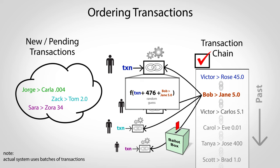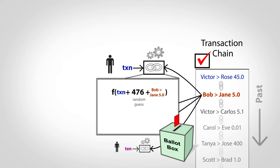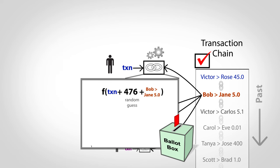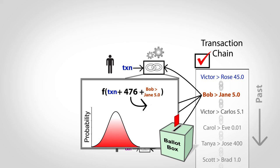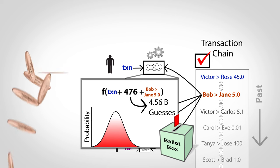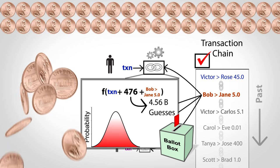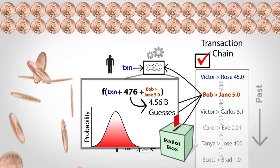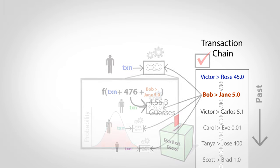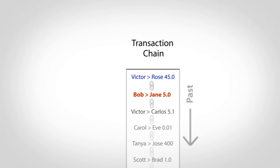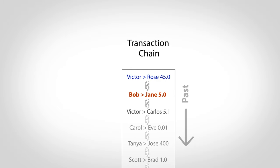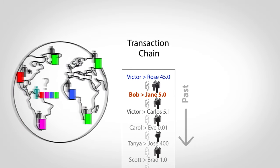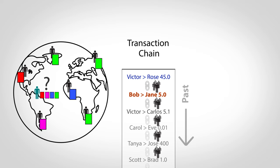But how are all the votes tallied? Because the cryptographic hash function has well-defined statistical properties, you can look at any given answer and estimate how many guesses it took to find it, just like estimating how many coin flips it would take to get 100 heads in a row. So the links in a chain not only put transactions in order, but also act as an effective vote tally, making it easy to see which chain most people are using.